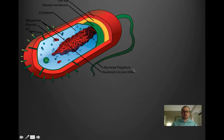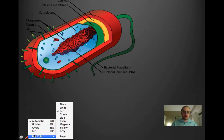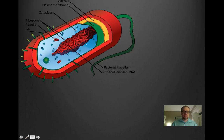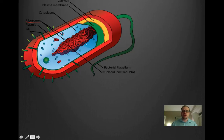If we look at this example of a bacterial cell here, you can see that it does have some organelles. An example of those would be the ribosomes. Bacteria, like eukaryotic cells, also have ribosomes, which are needed for protein synthesis. But all the organelles you see here are lacking membranes — there are no membrane-bound organelles in bacteria other than the actual cell membrane that surrounds the whole bacterium.